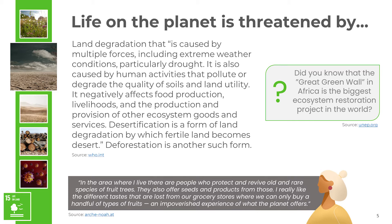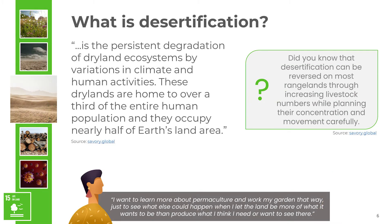Desertification is a form of land degradation by which fertile land becomes desert. It is the persistent degradation of dry land ecosystems by variations in climate and human activities. These dry lands are home to over a third of the entire human population, and they occupy nearly half of the Earth's land area.